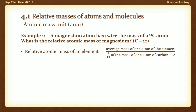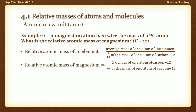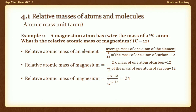The average mass of one atom of an element is equal to the present atom. Carbon-12 atom is 12 EMU, and Magnesium atom is 24 EMU.